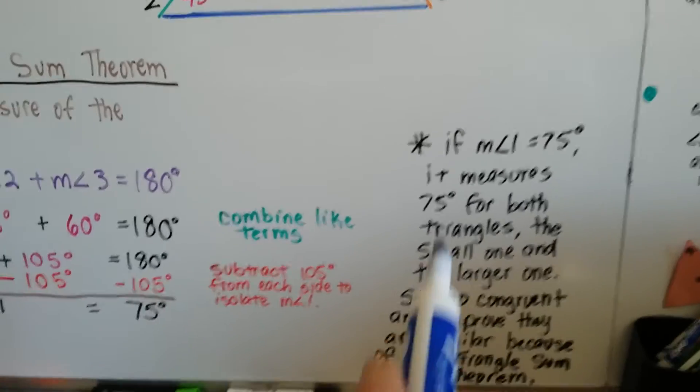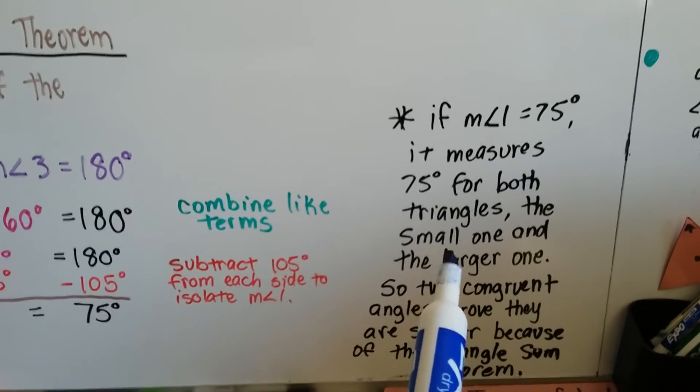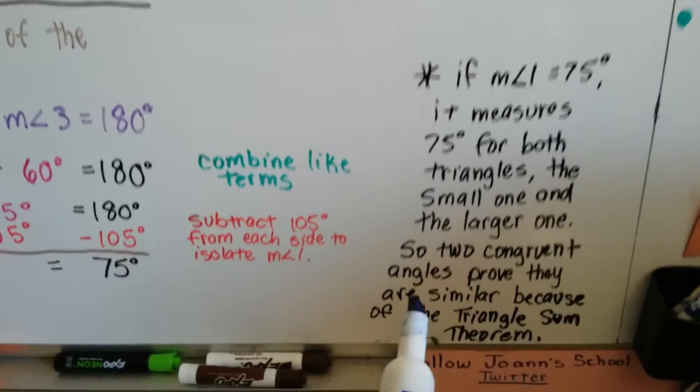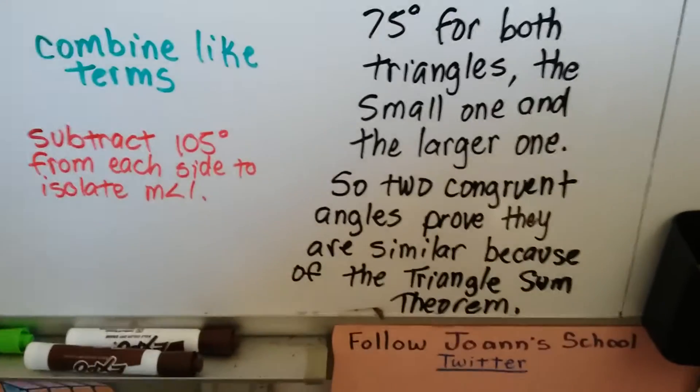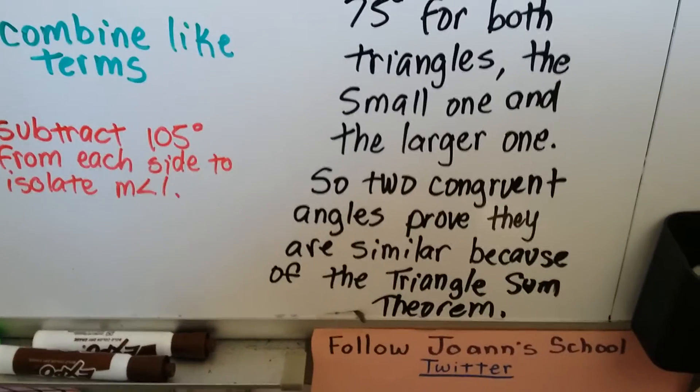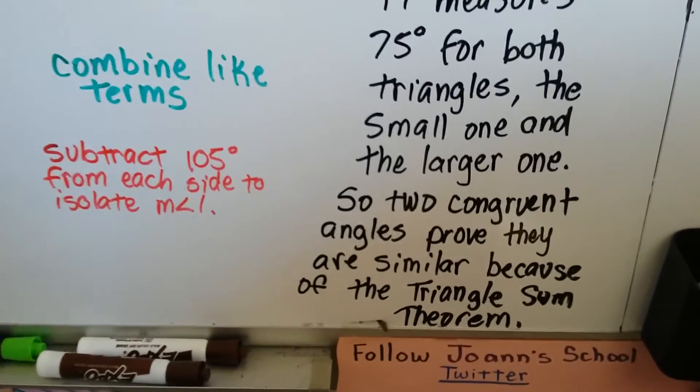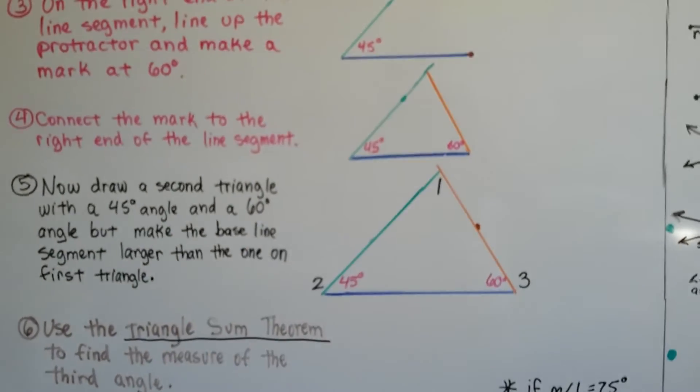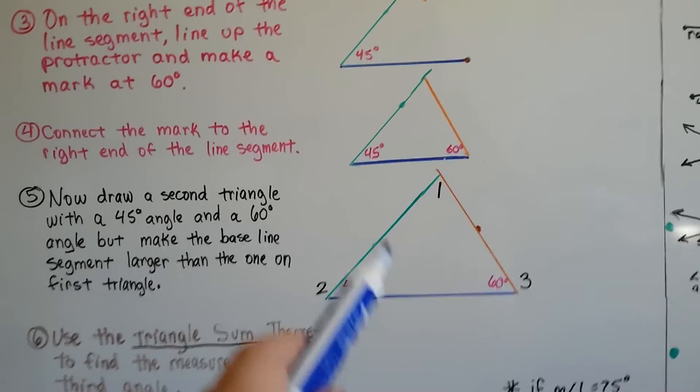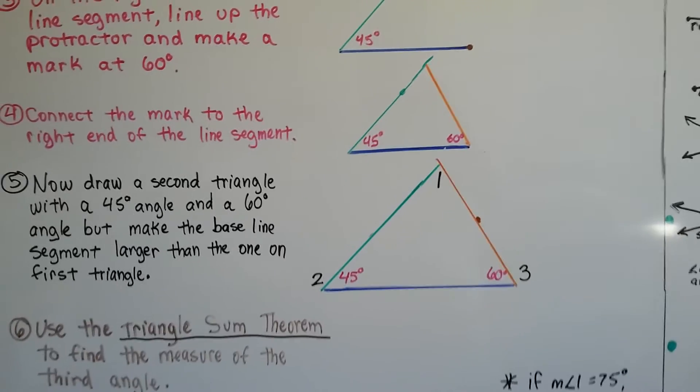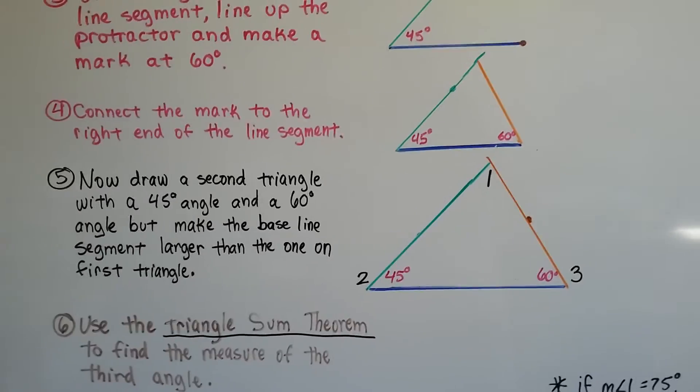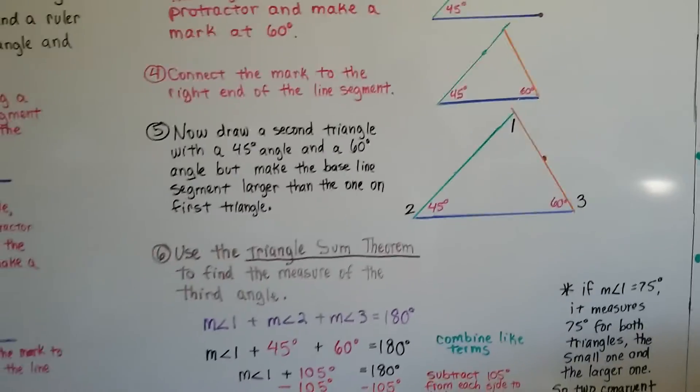Now, if the measure of angle 1 is 75 degrees, it's 75 degrees for both triangles, the small one and the larger one. So two congruent angles prove they're similar because of the triangle sum theorem. It has to be 75 degrees here and 75 degrees there. So we know they're similar because they have similar angle measures, and two angles were enough information to prove it, wasn't it? Because of the triangle sum theorem.